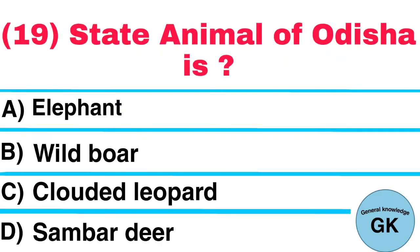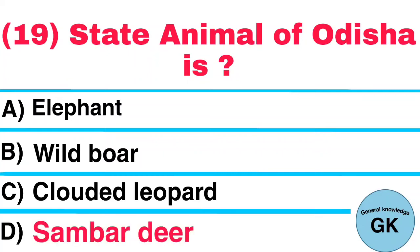Question Number 19. State Animal of Orissa is: A. Elephant, B. Wild Boar, C. Clouded Leopard, D. Sambar Deer. Answer: Sambar Deer.